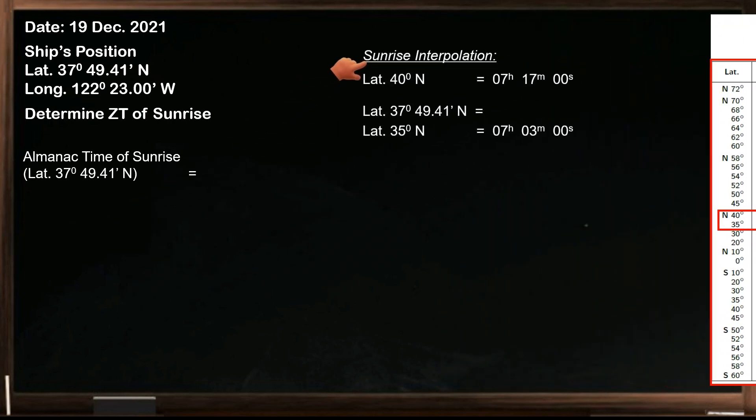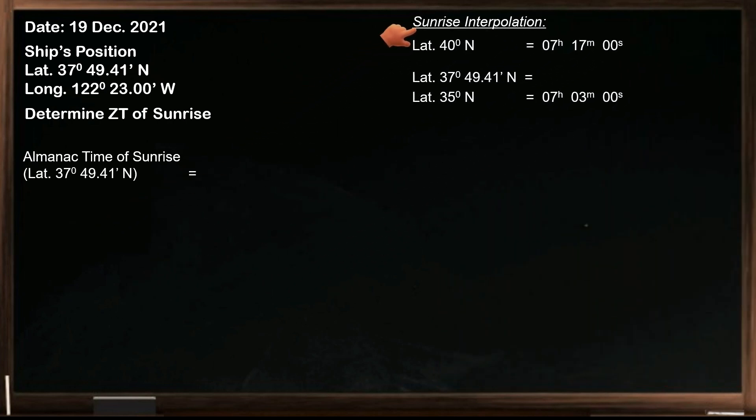To interpolate, you can use any method you are familiar with, such as using a calculator or an Excel sheet for faster results. The method that I'll show you is manual interpolation. So the difference between these two latitudes is 2.18 degrees, and the difference between 40 and 35 degrees is 5 degrees. Be sure that these values have the same units, which is in degrees of an arc. For those who are confused about how to get 2.18 degrees, just convert 49.41 minutes into a fraction of a degree, so divide 49.41 minutes by 60, since 1 degree is equal to 60 minutes. This will become latitude 37.82 degrees. By subtracting it from latitude 40 degrees, the difference is 2.18 degrees.